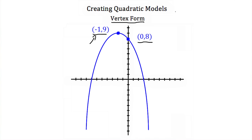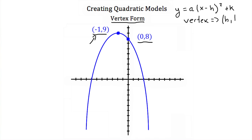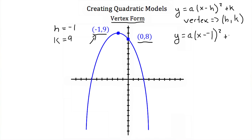Remember, vertex form looks like y is equal to a times x minus h squared plus k. And this means our vertex has the coordinates h, k. Well, here's my vertex at negative 1, 9, and that means my h is negative 1 and my k is 9. So if I plug those in, I'm going to get y is equal to a times x minus negative 1 squared plus 9.